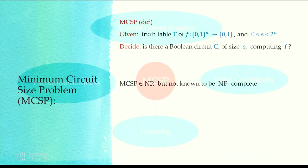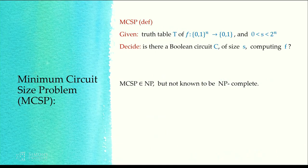Let me define or remind you what MCSP is. You've seen it several times already. You give a truth table of some function given explicitly, of size two to the little n, and some parameter s, and you want to know if there's a small Boolean circuit computing your function. The trivial observation is that this problem is obviously in NP — there's a certificate, namely the circuit itself. But we don't know if it's NP-complete, even though it probably is.